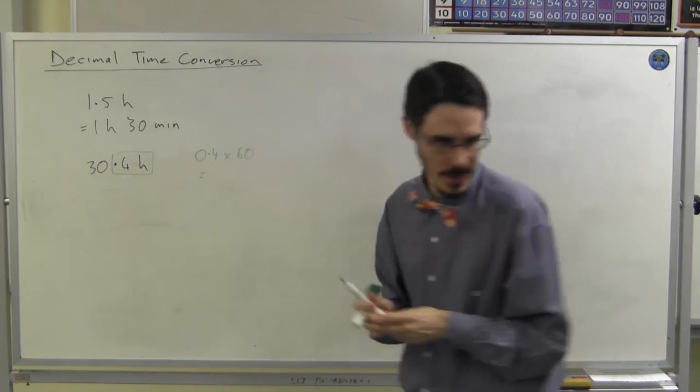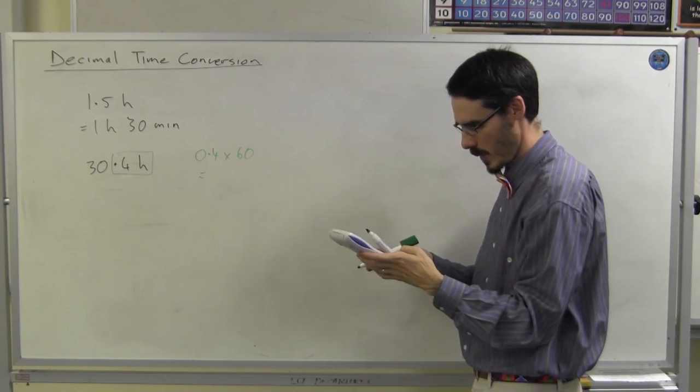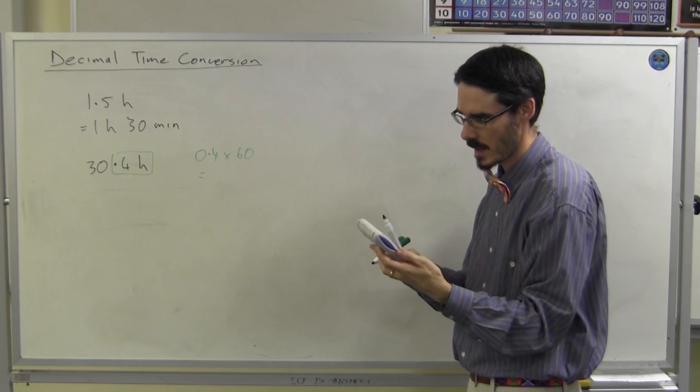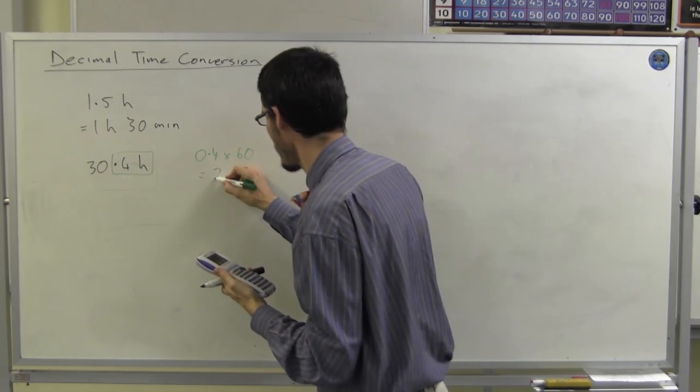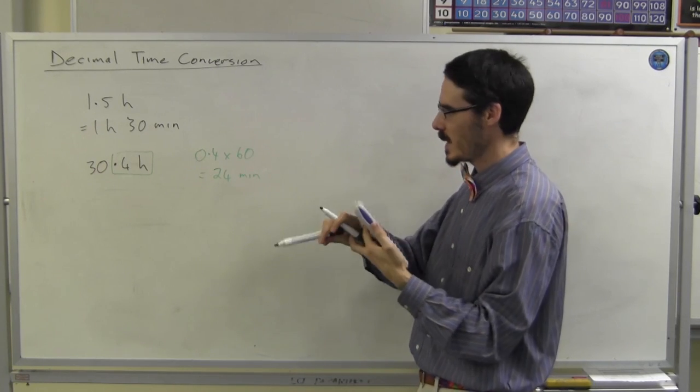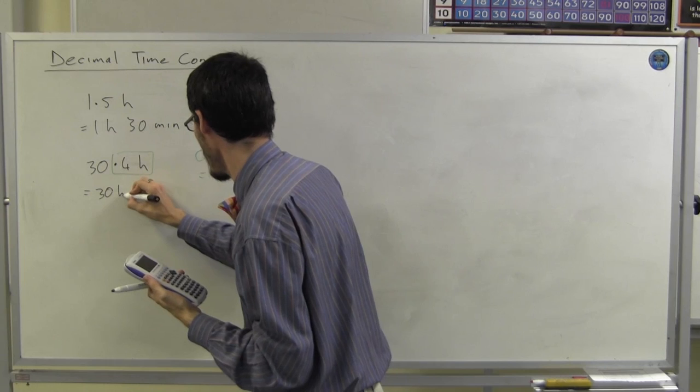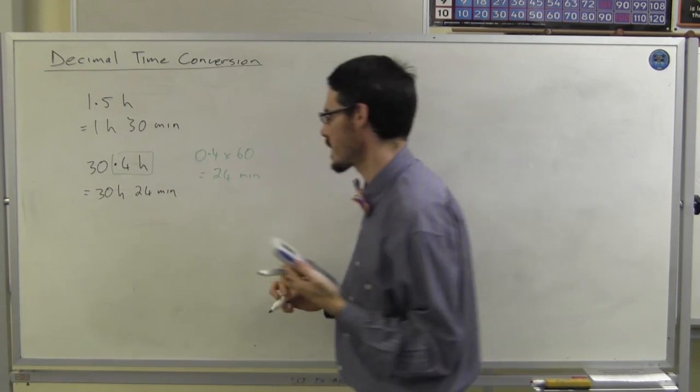And you can get your calculator and ask it for 0.4 times 60, which is 24. Which means this one here is 30 hours and 24 minutes.